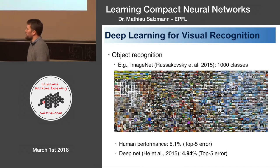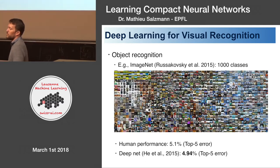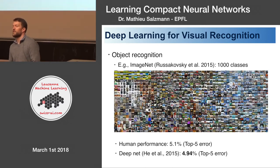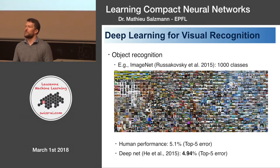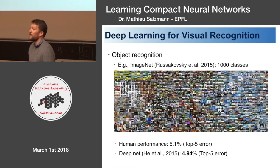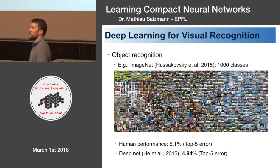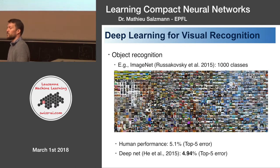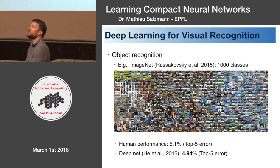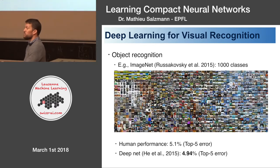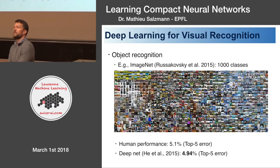If we look at the progress based on deep learning, there's a paper showing that human performance on this dataset is about 5.1% error — top five error — which means you get the correct class within the first five answers. Even a couple of years ago, in 2015, there was a network that reached below human performance error, with 4.95% top five error. So it's really impressive what deep networks can do on this task.